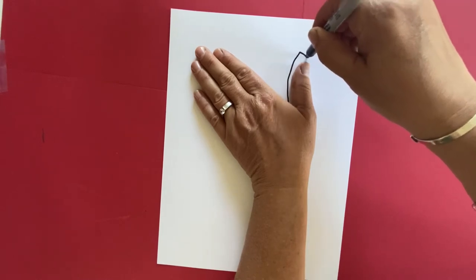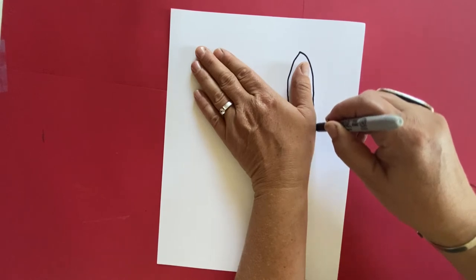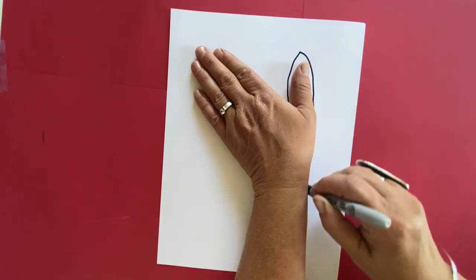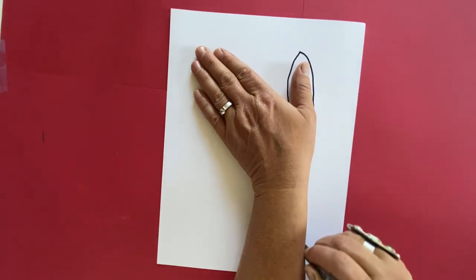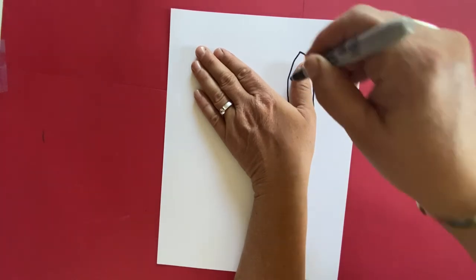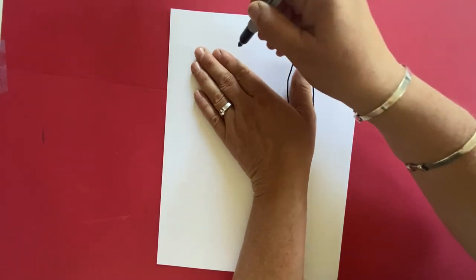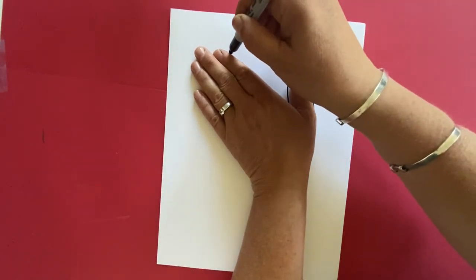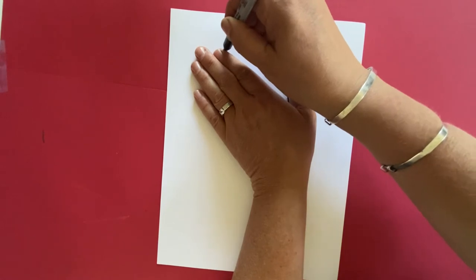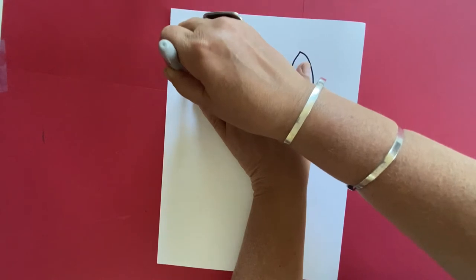Remember to go very slowly and take your time. That way you can go right close to your hand. If you go really fast, you're not going to have as much control with your pencil. It doesn't have to be perfect. You just want to have that outline of your hand and your thumb sticking up like an ear.